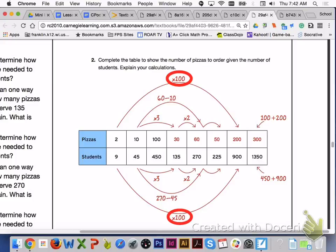For the ratio of 200 to 900, I multiplied 2 by 100 and 9 by 100.